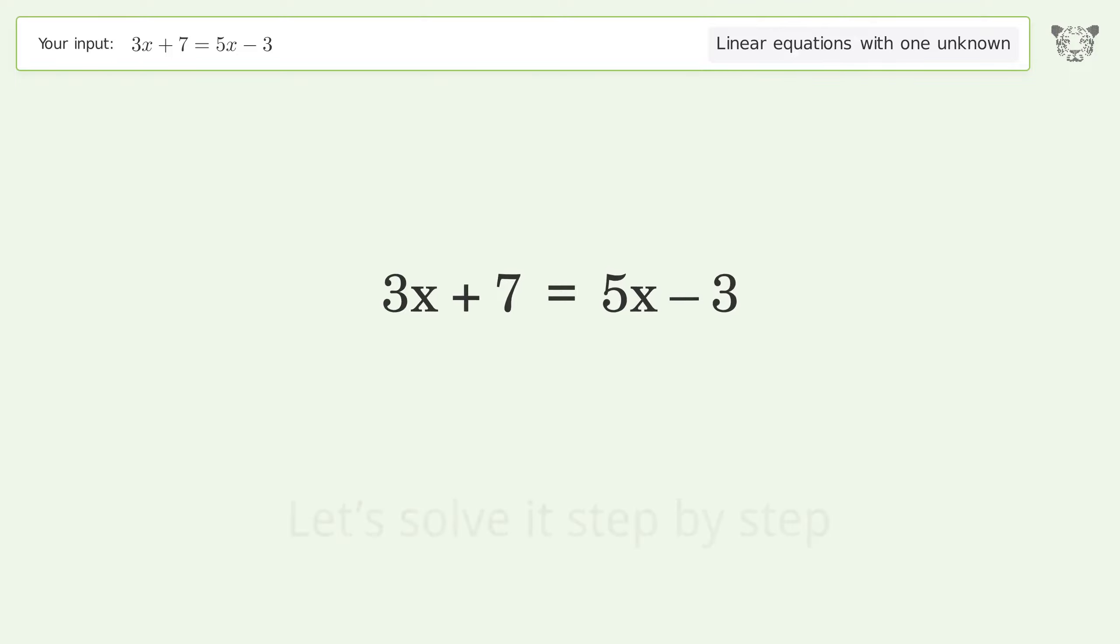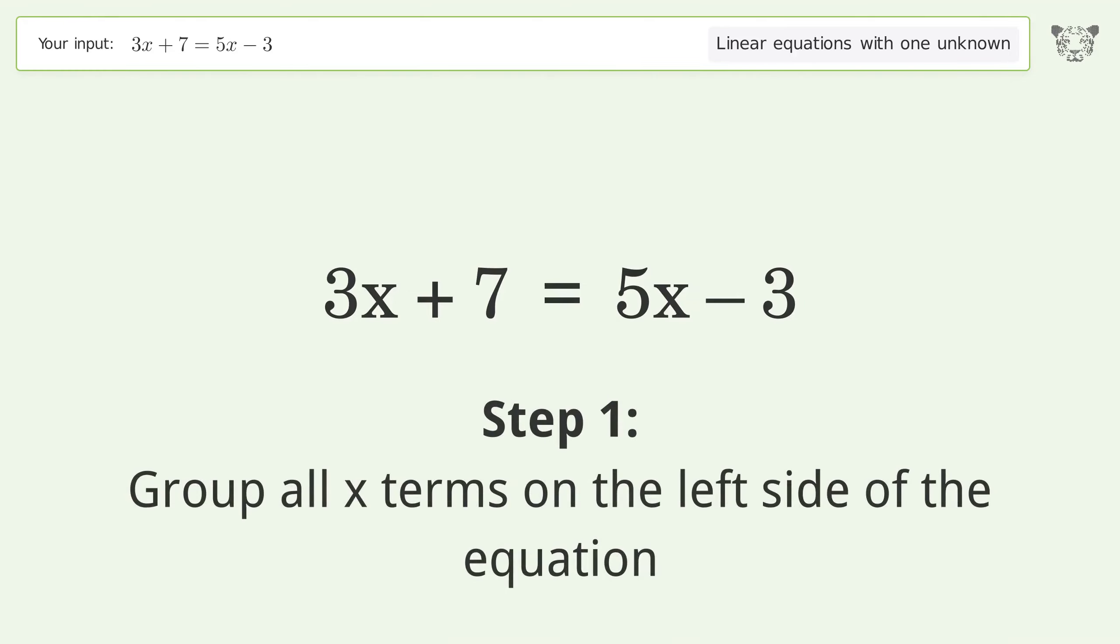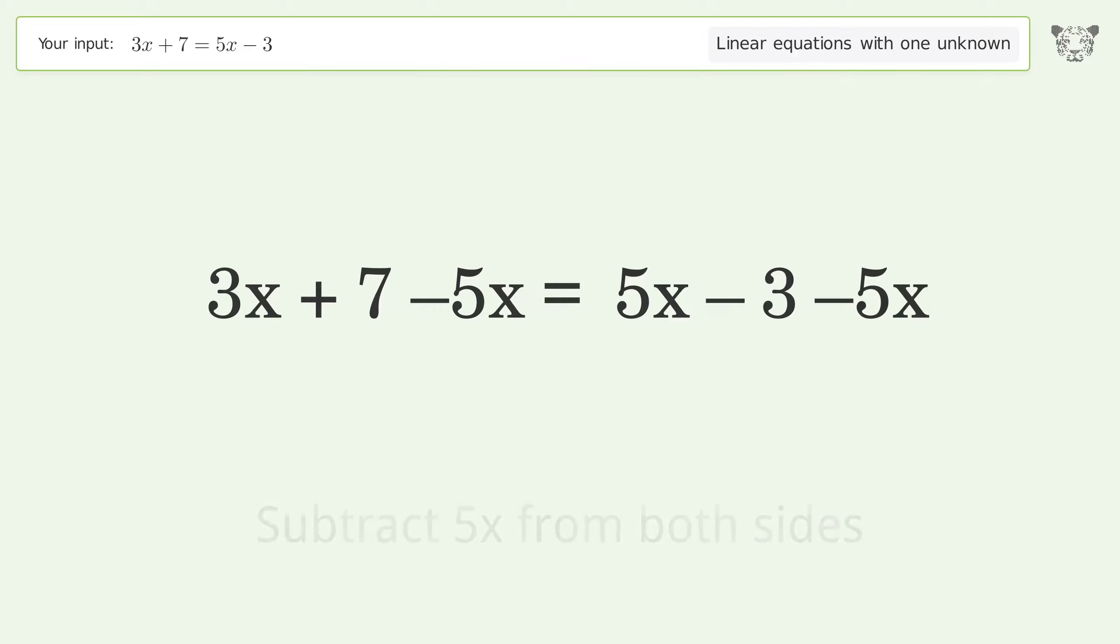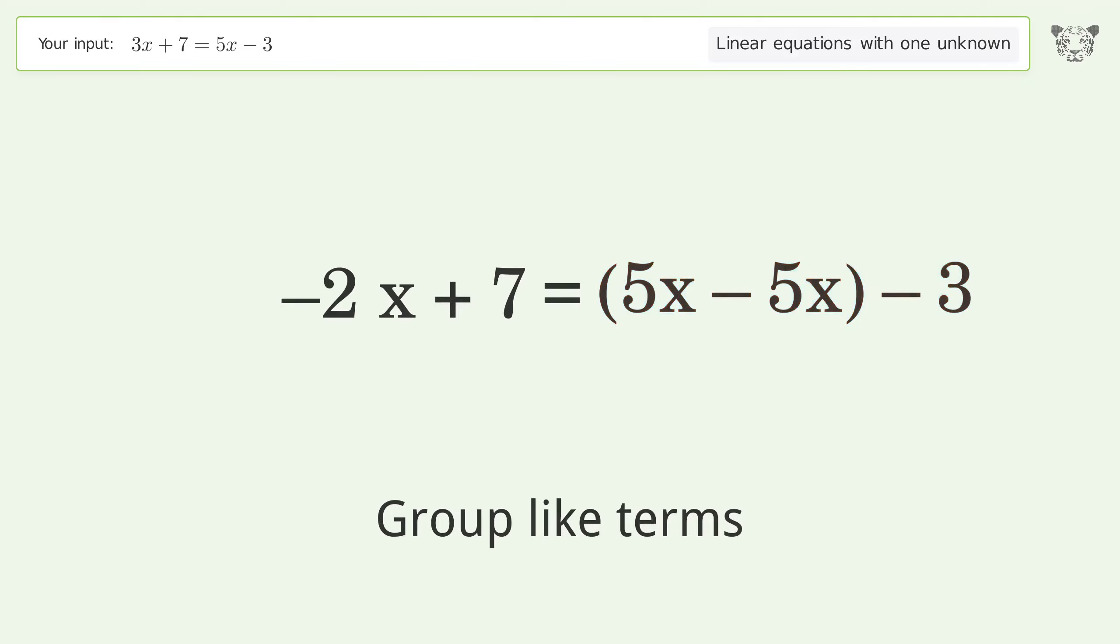Let's solve it step by step. Group all x terms on the left side of the equation. Subtract 5x from both sides. Group like terms. Simplify the arithmetic. Group like terms. Simplify the arithmetic.